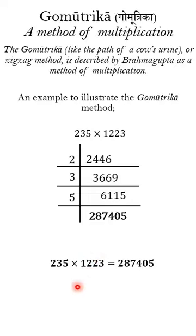This is our final answer: 235 multiplied by 1223, and this is the Goomutrika method of multiplication. Thank you.